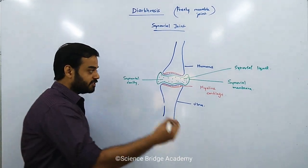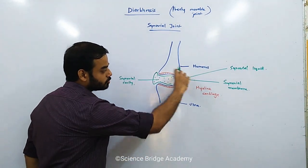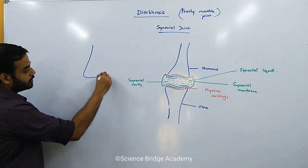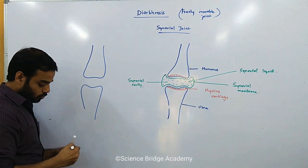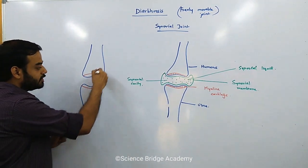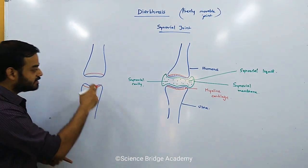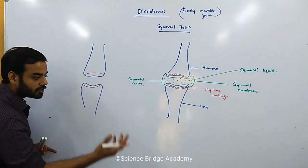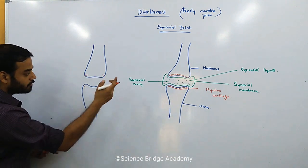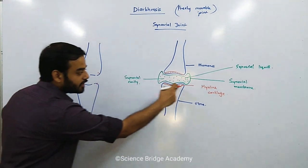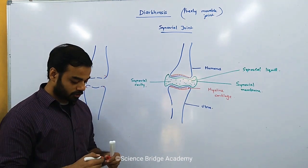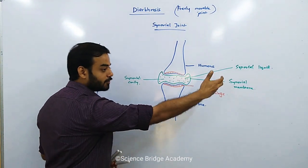Just imagine if there were no synovial membrane — only two bones with cartilage at their ends. Over time, even the cartilage would wear and tear and be removed, and then the bones themselves would get damaged. The cartilage alone is not sufficient to prevent friction. That is why the synovial fluid is also present — to further prevent friction and ensure the two bones do not come into direct contact.